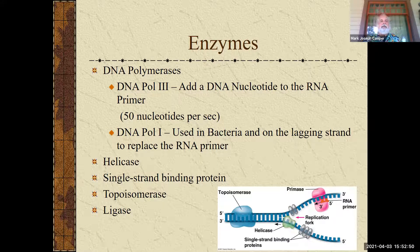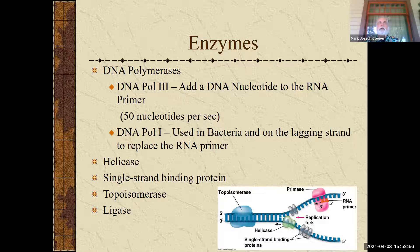Starting with polymerases again: DNA polymerase III is the one that's actually bringing in the new nucleotides, both on the leading and lagging strands. This is the one that's attaching nucleotides to the 3-prime end. They've timed it — it runs about 50 nucleotides per second, so very, very quick.